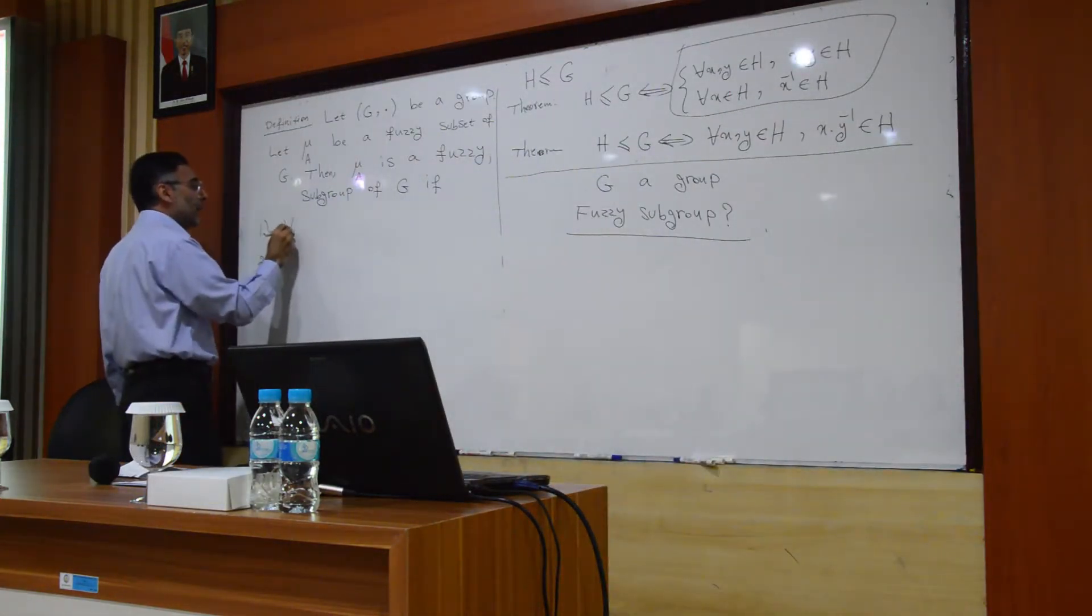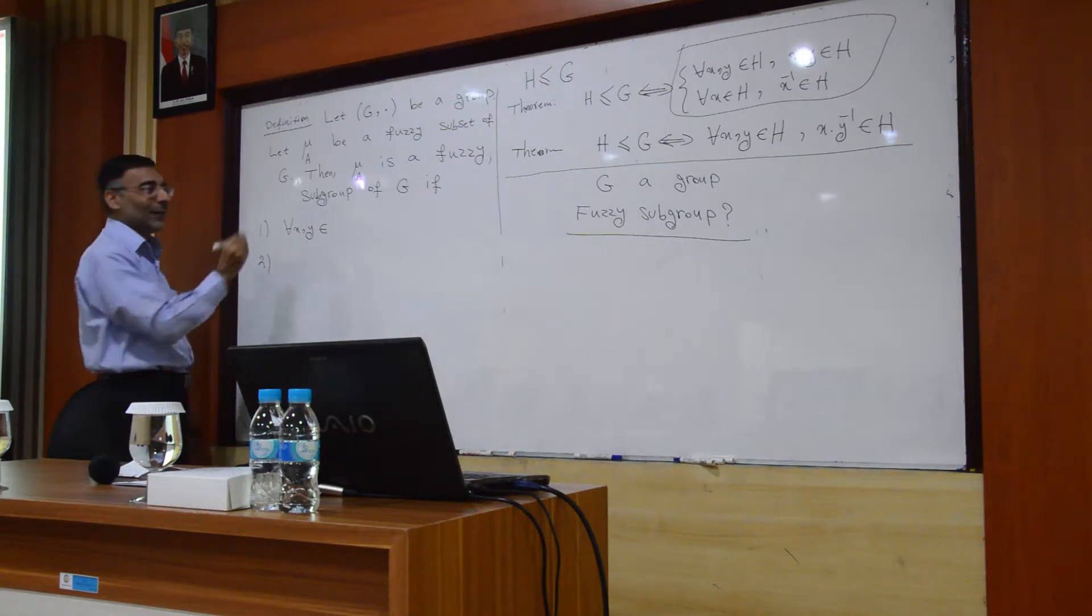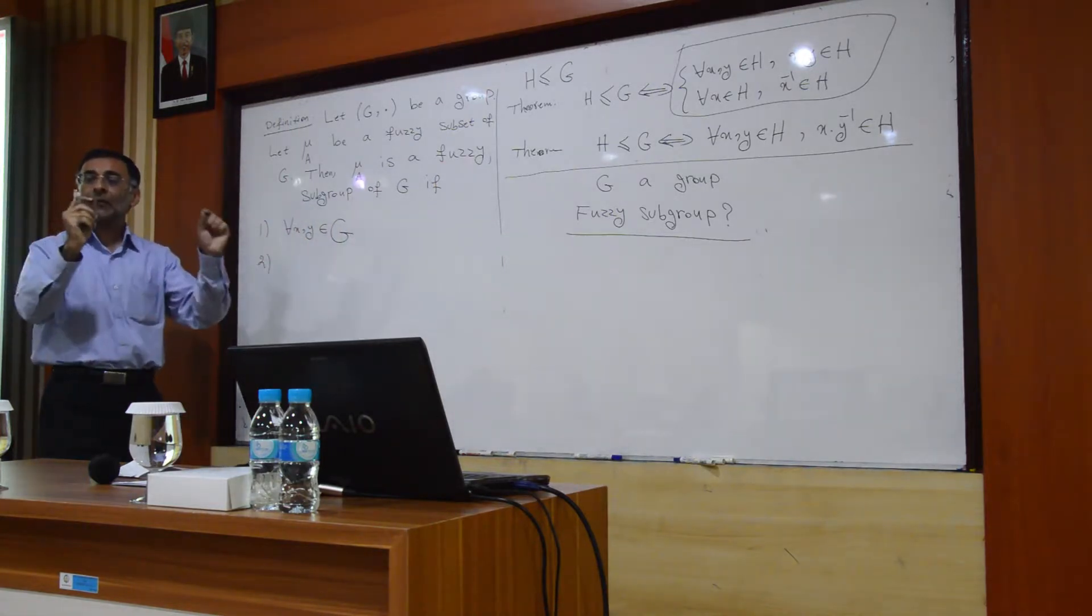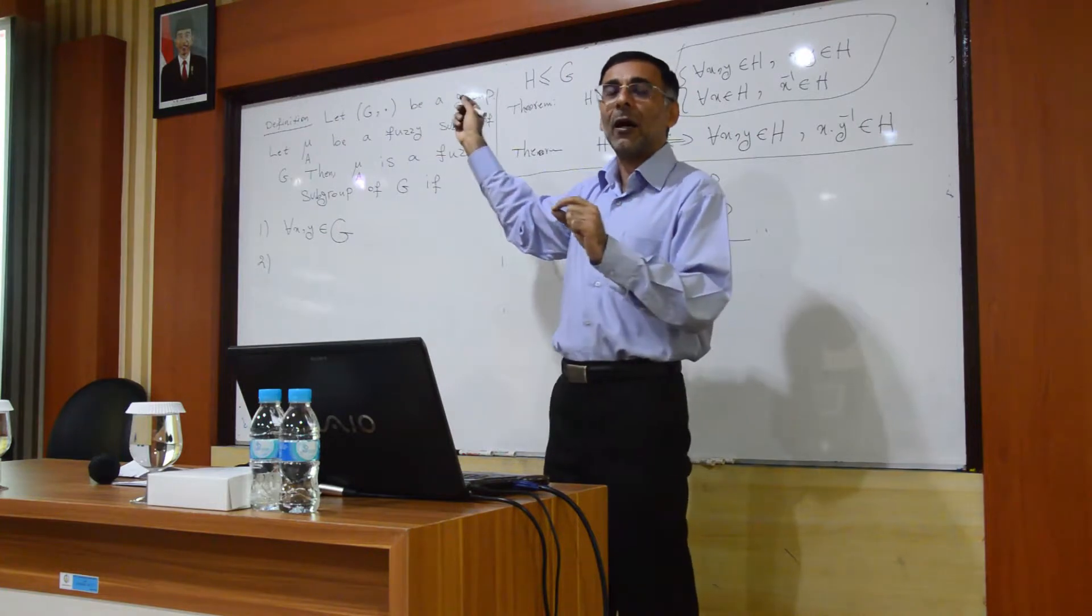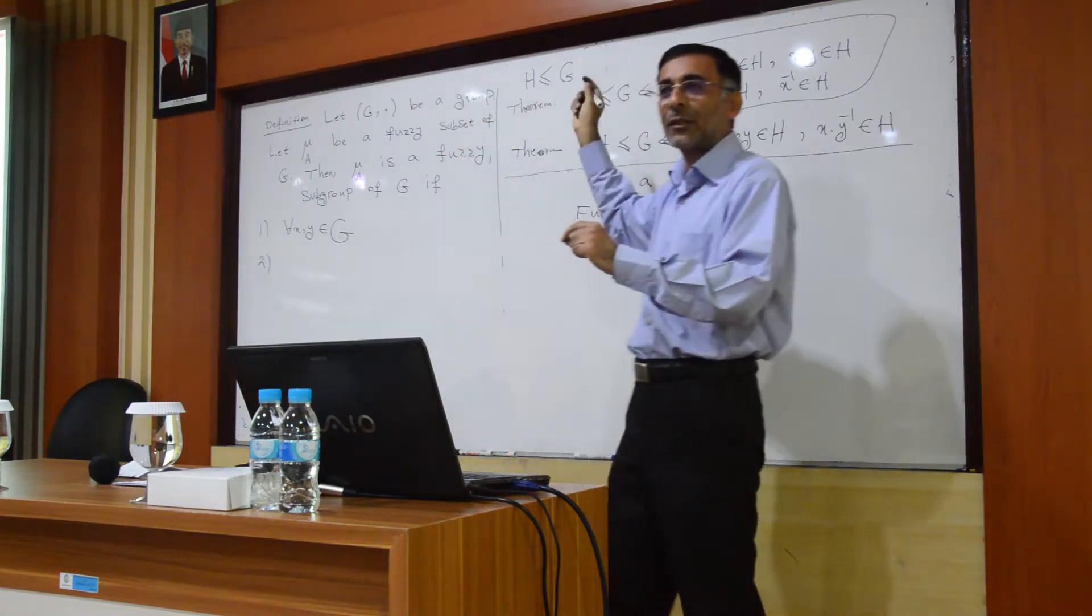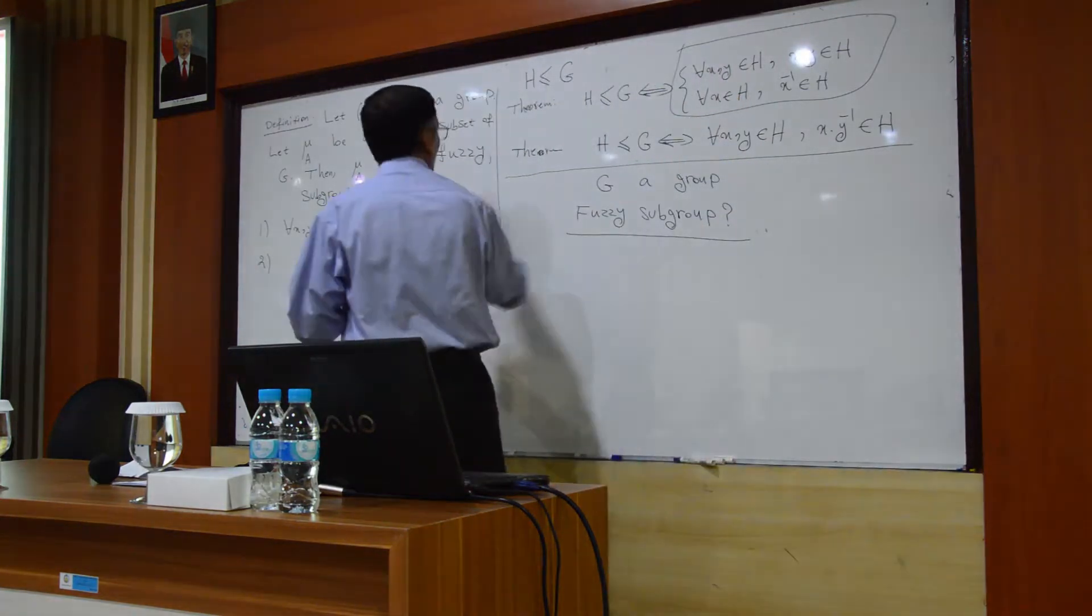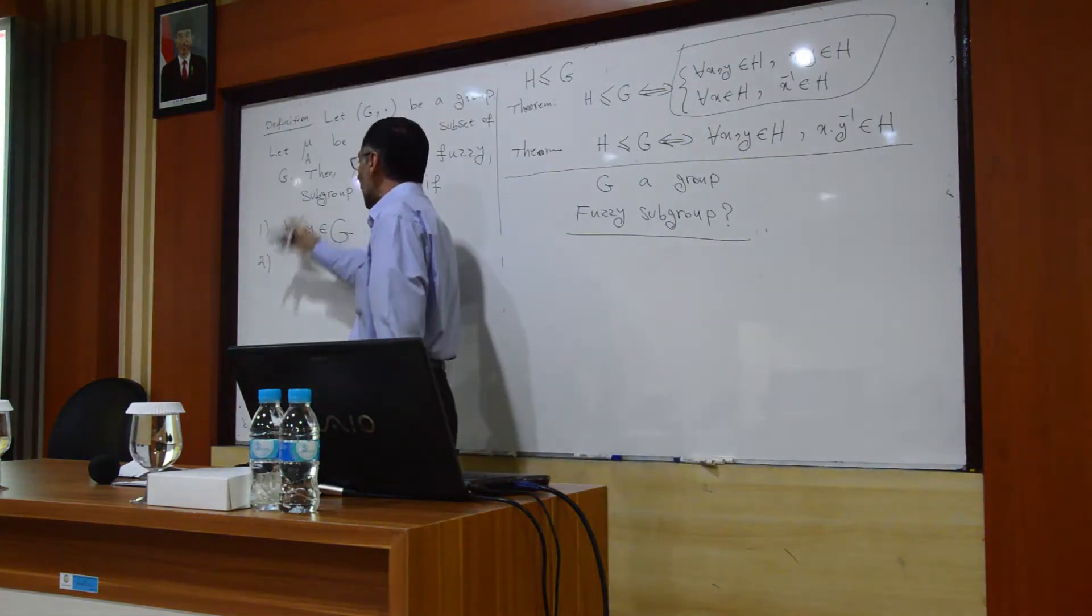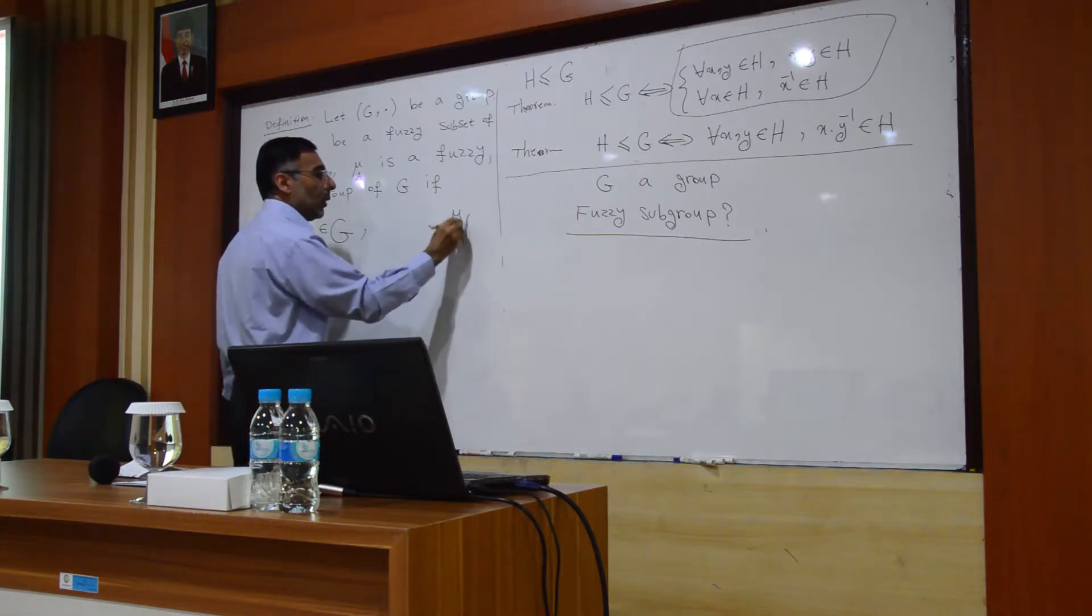x, y in G. We assign number between zero and one to all of the elements. Remember the setup, all of the students of your university, x1, x2, till x20 million. For every element, we must assign a number. So, here, ordinary case, we consider for every x and y in H. But, for fuzzy case, we consider for every x and y in G. mu of x dot y greater than the minimum of mu x and mu y.